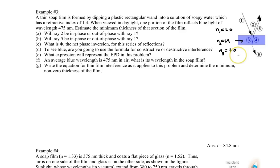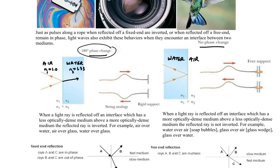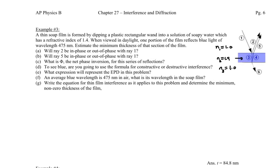Let's walk through this step by step. First, we ask whether ray 2 undergoes a phase shift. Ray 1 starts in air and enters the film at n=1.4, going from less dense to more dense — so yes, it undergoes a 180-degree phase shift.